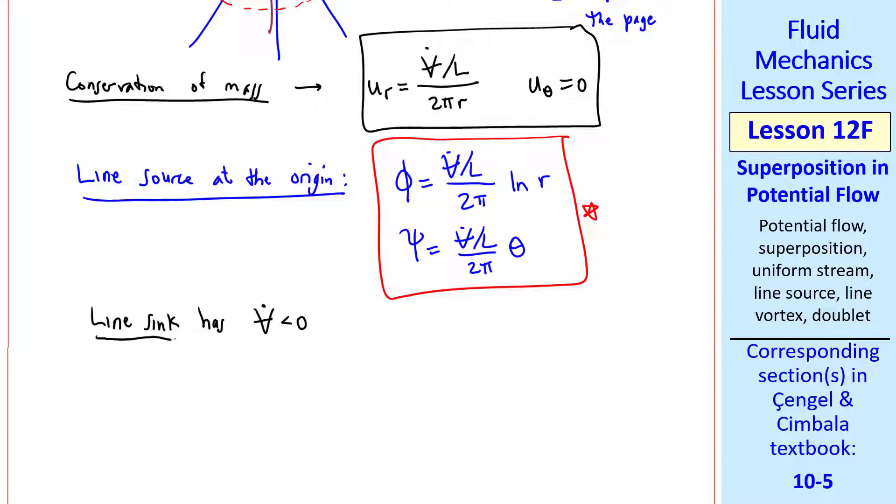The equations for a line sink are identical, except that v dot is less than 0.